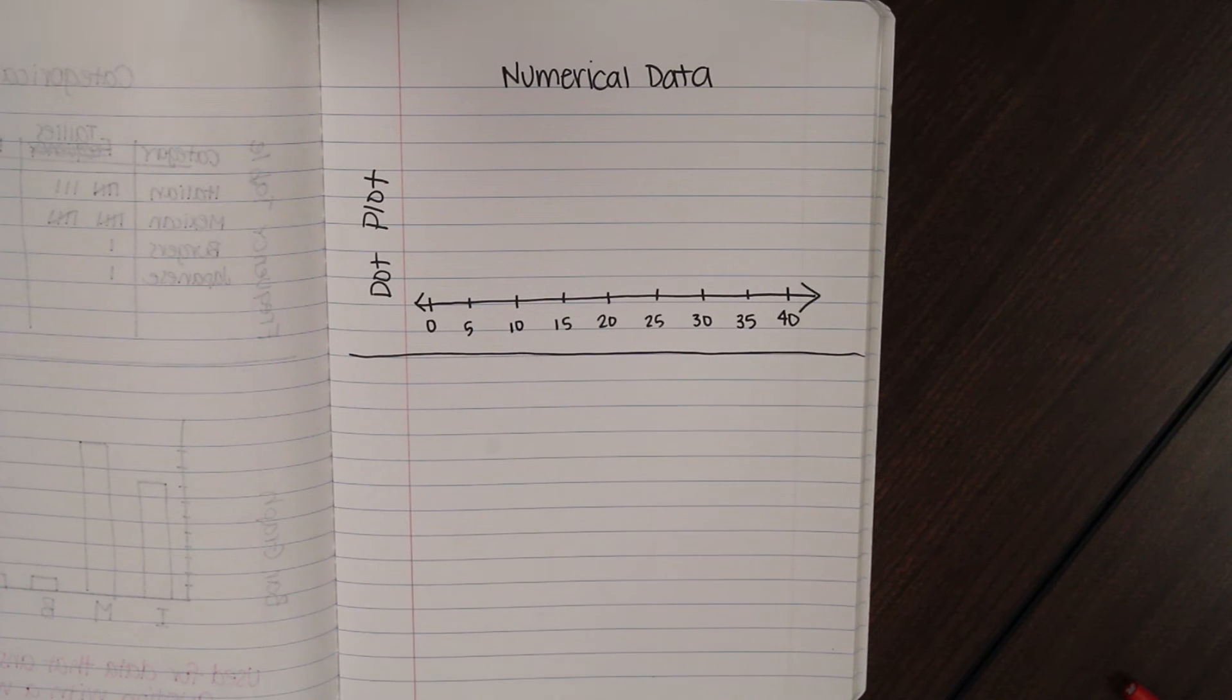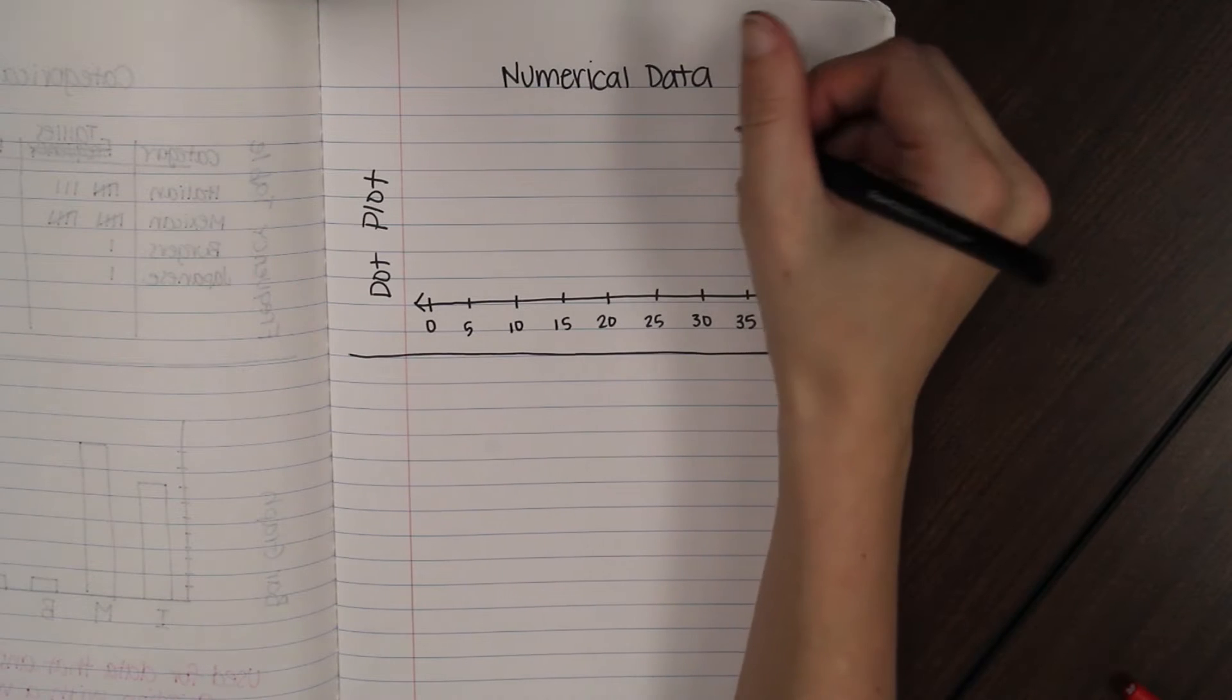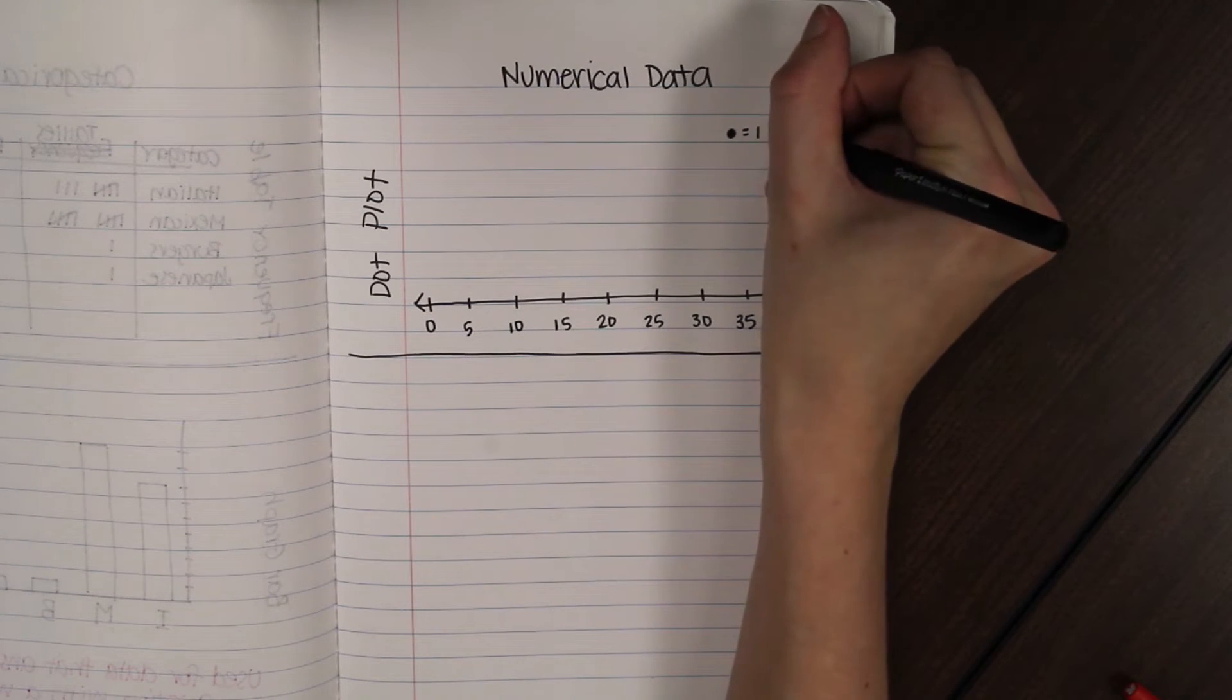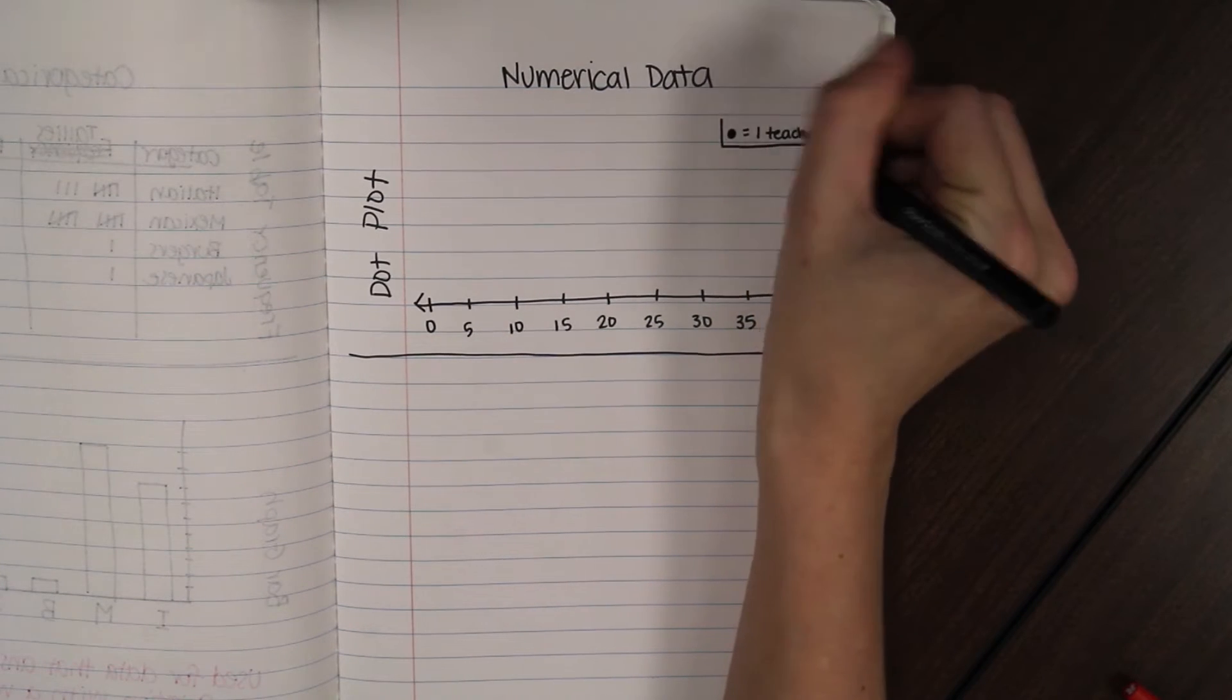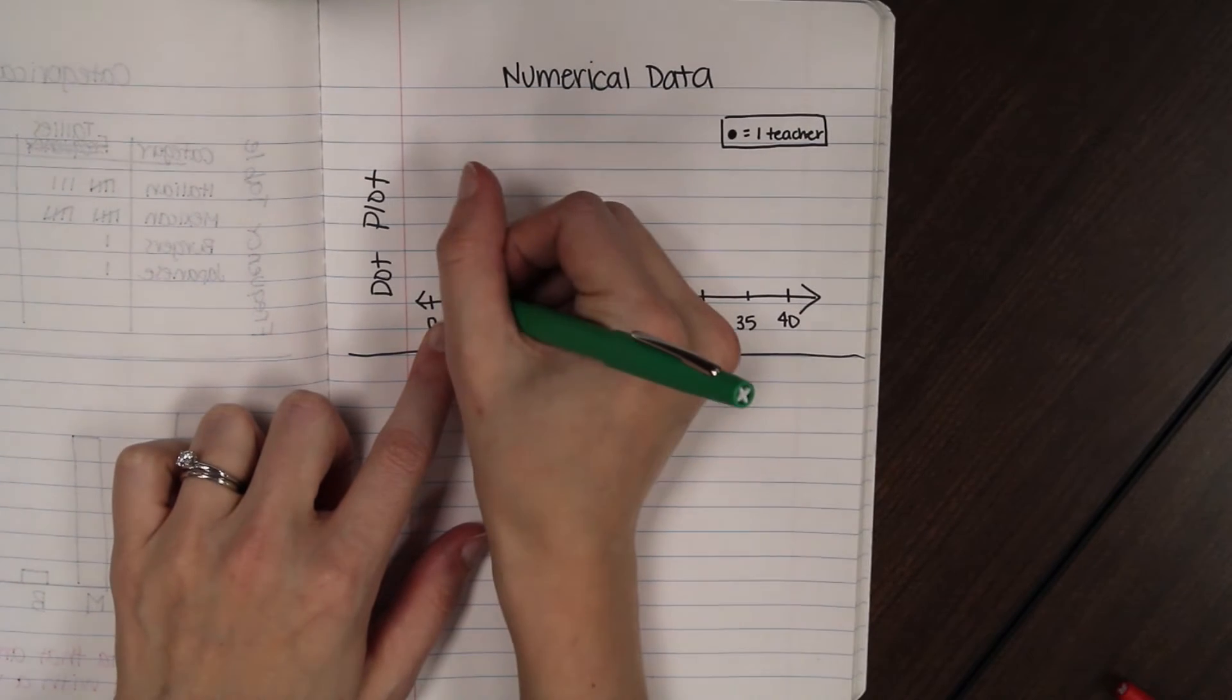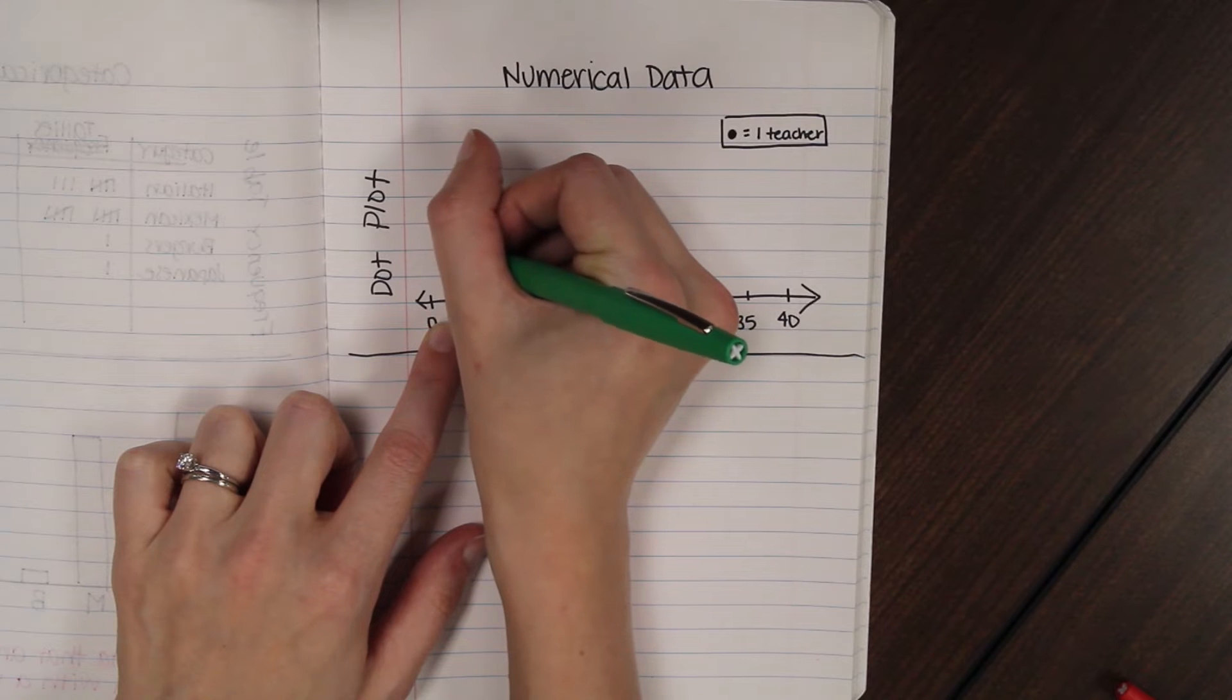Alright. So, you will need a key for this. I'm going to say, since we didn't ask that many teachers, that each time I put a dot, that that dot is going to equal one teacher. Or one concert, maybe, in this case. Okay. So, we'll go through. We had three teachers say that they went to three concerts. So, at about three, I'm going to put one, two, three dots.